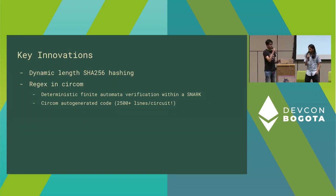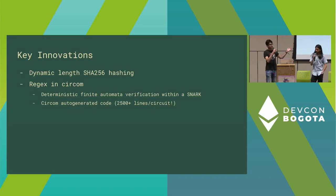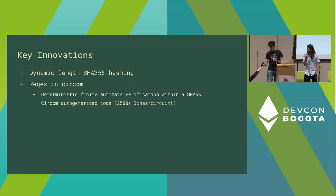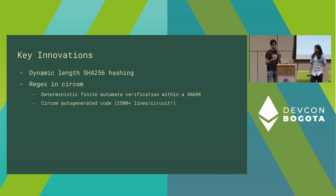What we realized is we can take only the part of the message body containing the username — which is at the end — and hash only that part inside the circuit. We hash the first roughly 10,000 bytes of the message outside the circuit and pass it as a private input. This doesn't break any security guarantees because we still check that the final hash equals whatever is signed by the mail server. Breaking this would require computing a pre-image for the hash, so the security properties are preserved with far fewer computations.